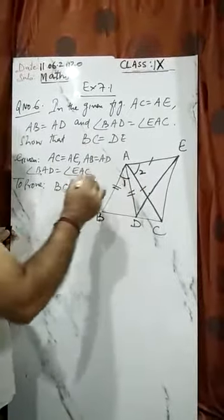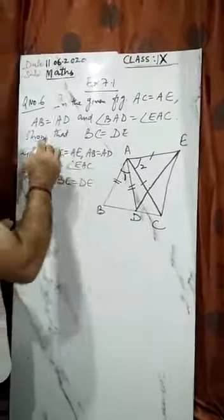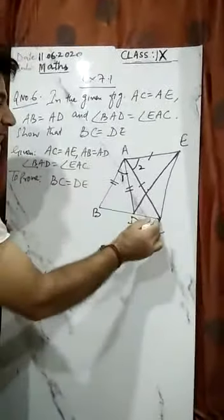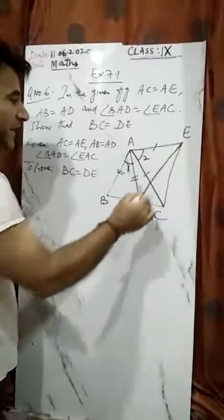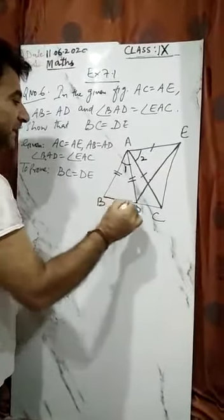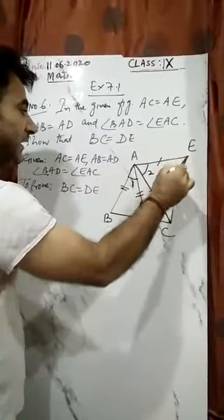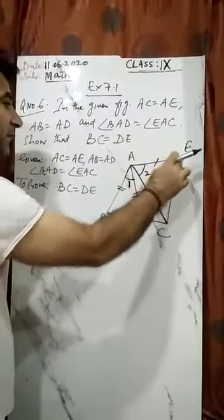So you have to prove that side BC and side DE are equal. BC and DE, you have to show that they are equal.